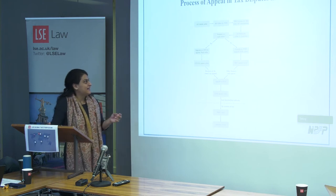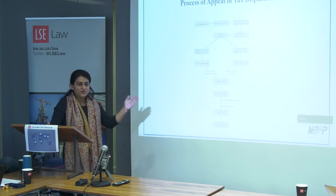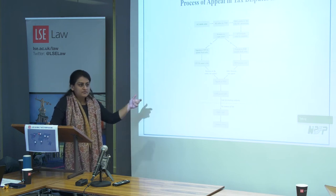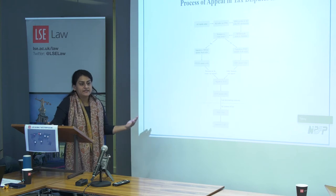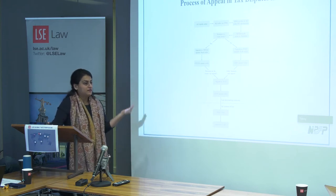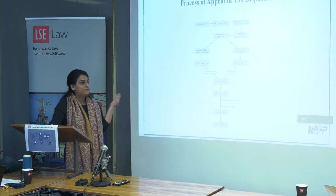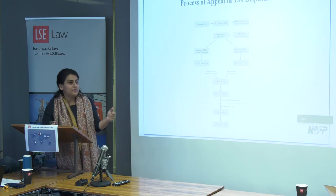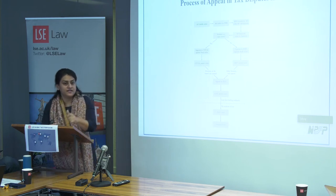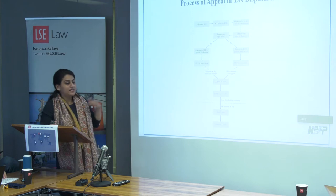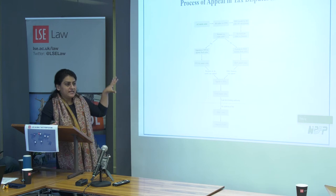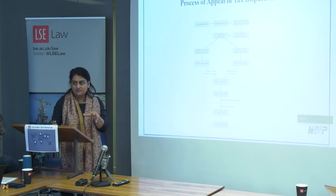The Dispute Resolution Panel was a special adjudicating authority created in 2009 to reduce assessment time. Before that, the other process was to take the draft order, finalise it, and dispute it before the Commissioner of Income Tax Appeals. The assessee can then contest the DRP or CITA decision at the Appellate Tribunal, which is the final fact-finding authority. Substantive matters of law proceed to the High Court or Supreme Court. There are two appeal processes: the CITA is not bound by any time limit, the DRP must finish within nine months, and the Appellate Tribunal is also not time-bound.